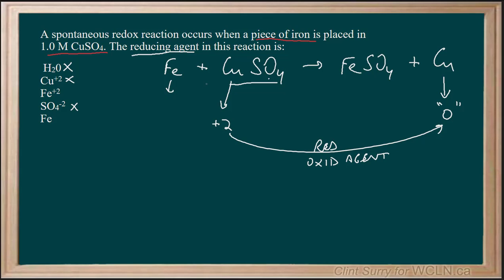This has a charge of zero, and at the end here this has a charge of plus two. Going from here to here, this is oxidizing, making it a reducing agent. So our species that is the reducing agent in this case is iron.